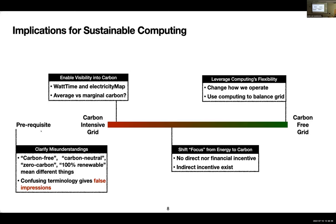Finally, as we have more renewable or carbon-free energy resources, we need to change how we operate. Computing is a highly flexible load that can help on both ends of the spectrum — it can allow us to move to lower-carbon energy resources, and that flexibility can help balance the grid by responding and participating in demand response programs.